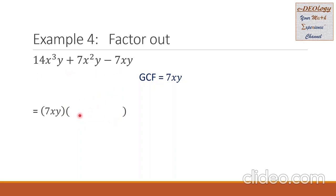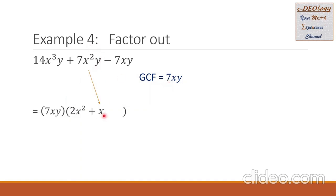Since we have three terms, there must be three terms inside the polynomial. For the first term, we divide by the GCF — the answer is 2x squared. For the second term, we divide by the GCF — the answer is x. For the third term, we divide by the GCF to get negative 1. So finally, our answer is 7xy times the trinomial 2x squared plus x minus 1. This is the final answer.